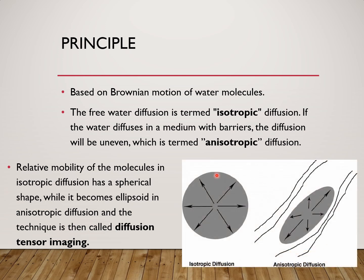This picture shows isotropic diffusion acquiring a spherical shape, while along the nerve fibers it causes anisotropic diffusion forming an ellipsoid shape.